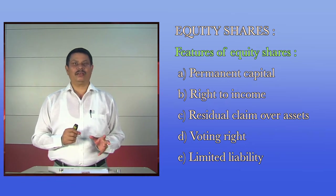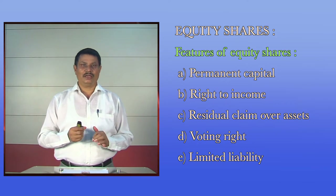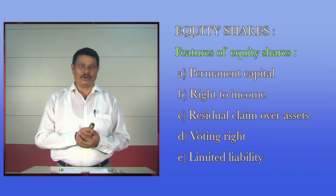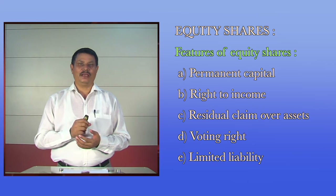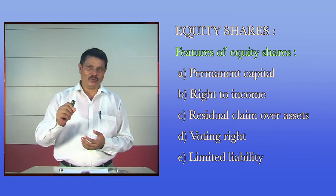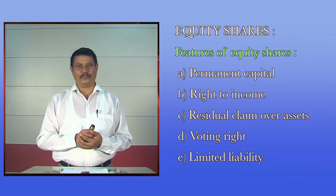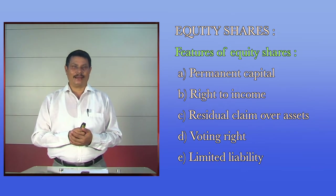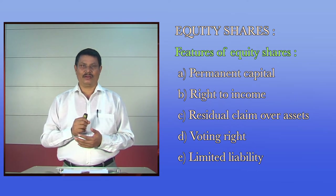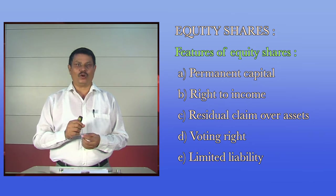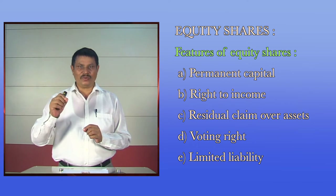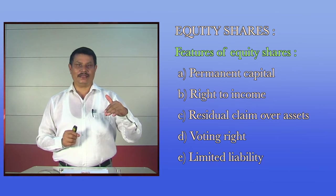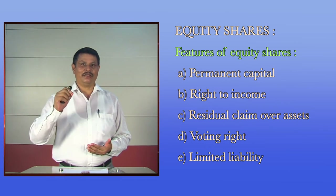Equity shareholders have some features. Number one is permanent capital. Equity shares are the only source of permanent capital for a company. Equity share capital is redeemable only at the time of liquidation, and that is why it is permanent capital. Next is the right to income. Equity shareholders have a claim to the residual income of a company — meaning the income left over after paying expenses, interest charges, taxes, preference dividend, etc.